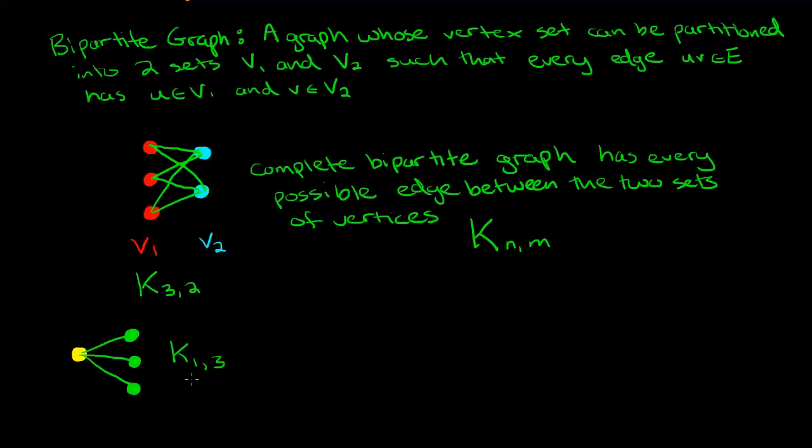If you have a complete bipartite graph where one of your partite sets has size 1, then it has the special name star. It kind of makes sense because you could really draw these green vertices as sort of surrounding the outside of this central yellow vertex. It sort of does look like a star, especially if you increase this number here. With only three, it doesn't look too much like a star, but if you kept going, it would look more and more like a star, or at least it would sort of represent our interpretation of a star, because we know that stars are really spherical.